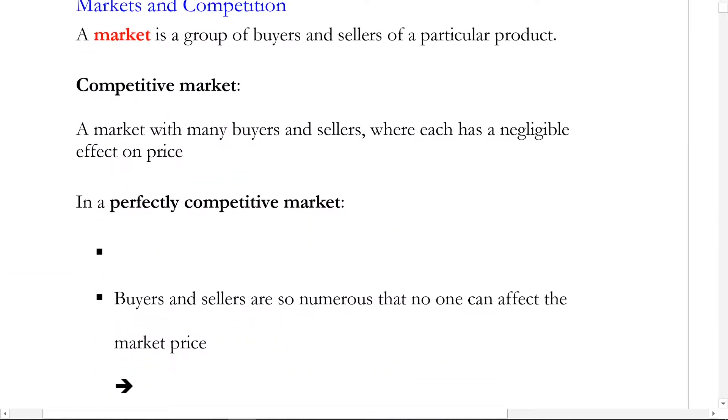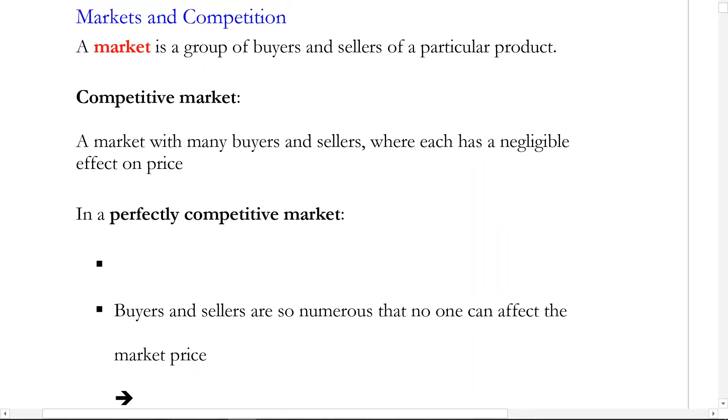When we're talking about markets and supply and demand, one critical assumption in this modeling framework for economics is that we have a good amount of competition in the environment. We're modeling competitive markets. A competitive market has a lot of buyers, a lot of sellers, such that no individual actor can have an effect on the price.